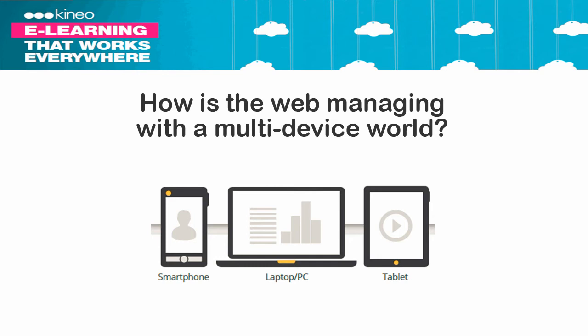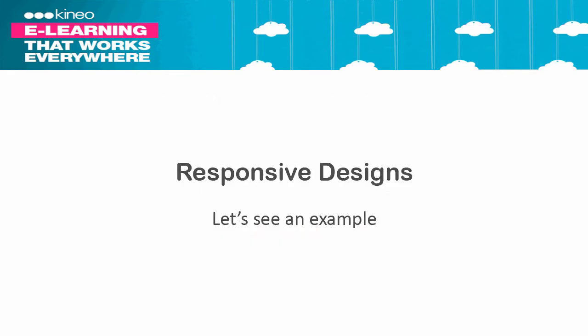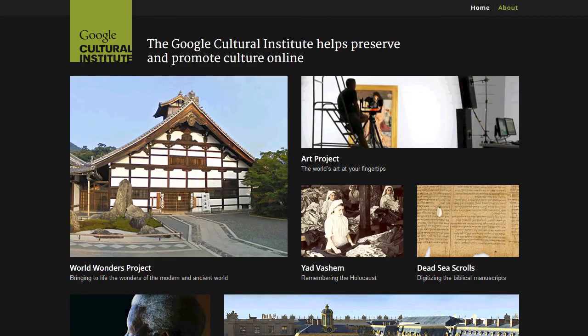That means a different experience. But how is the web dealing with that? Well, the first way is through responsive designs. And what do we mean by responsive designs? Here's an example of one from Google, the Cultural Institute.